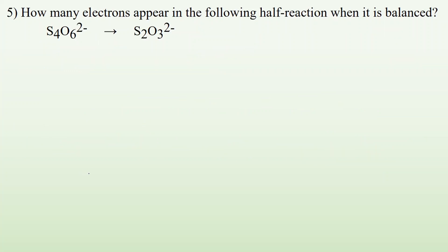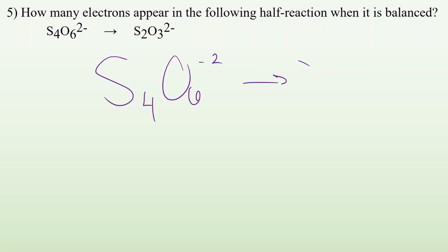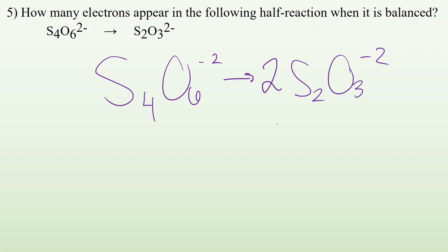Number five: how many electrons appear in the following half-reaction when it is balanced? We have S₄O₆²⁻ → S₂O₃²⁻. Balance sulfur first: four on the left, two on the right, so put a coefficient of two in front of S₂O₃²⁻. That also balances the oxygens and hydrogens. Now look at the charge: minus two on the left, and two sets of minus two gives minus four on the right. To balance the charge, add two electrons to the left. So two electrons appear.